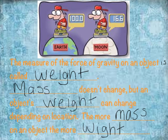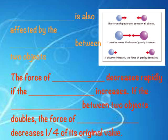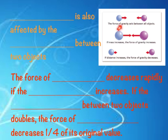So the more mass an object has, the more weight, as we can see comparing being on the Earth and the Moon. The first main point is that the force of gravity acts between all objects — we're attracted to the Earth, the Earth is attracted to the Sun, and so on. The second point is that if the mass increases between objects, the force of gravity is going to increase. The second set of spheres is much larger than the first because the mass increased, so the force of gravity shown by the arrows increases as well.